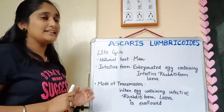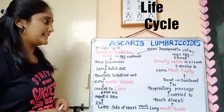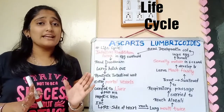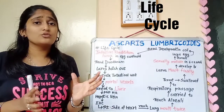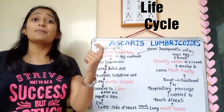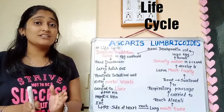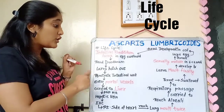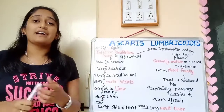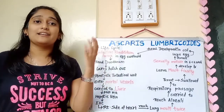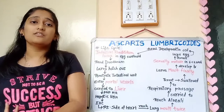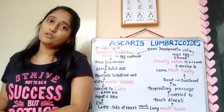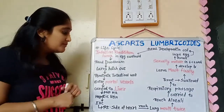Now we will see the life cycle in detail. The infective form is the embryonated egg containing the rhabditiform larva, which we ingest through contaminated food or water. The egg reaches the stomach and, due to gastric acidity, hatches and the larva hatches out. There is, however, a twist in the Ascaris lumbricoides life cycle.